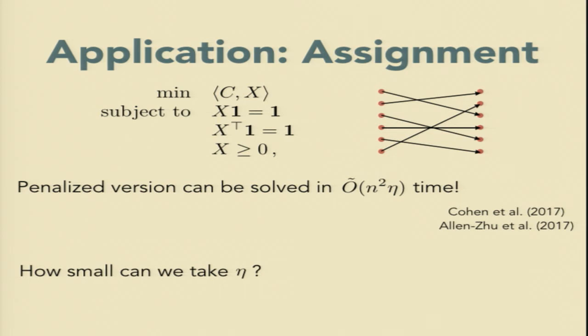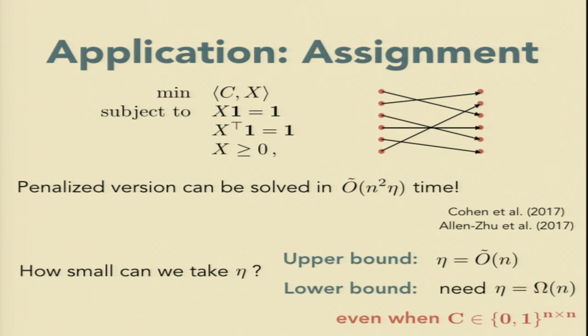So just to see whether we can break any longstanding bounds in combinatorial optimization, we should ask how small we can take eta for this problem. If we could take it really small, we'd have a near-linear time algorithm for assignment. But we have upper and lower bounds that show even in the case that's considered the most benign, which is where I just have zeros and ones in my cost matrix, really, we have to take eta of size n. So our upper bounds say that the exponential convergence only starts to kick in once eta is of size n, and there's a lower bound of an explicit matrix showing that we need eta to be approximately of that size.